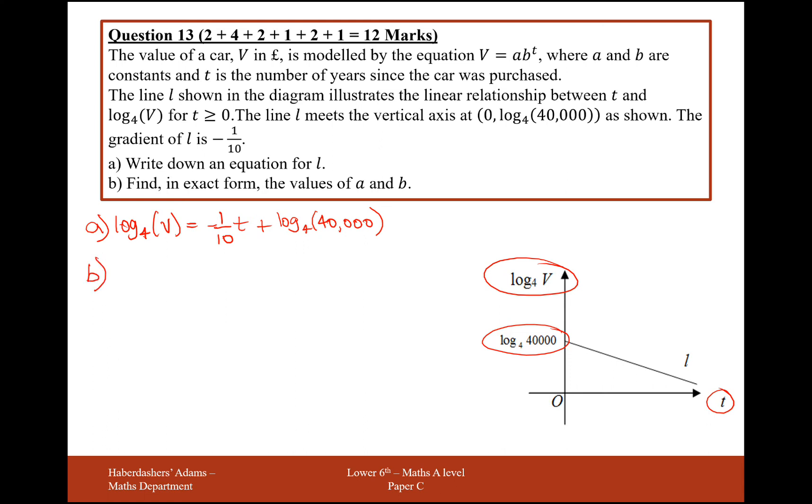Part b is find in exact form the values of a and b. So what I'm going to need to do is rearrange this equation here and get it into something that looks like V equals ab to the power of t. So to get rid of these logs, I need to group them all together first. So log base 4 of v minus log base 4 of 40,000, that will still equal minus a tenth t. The way that we now combine logs together when there's a subtraction involved is we can divide the logs. So log base 4 of v over 40,000 equals minus a tenth t.